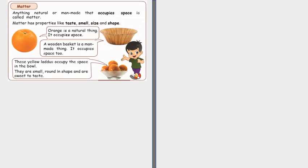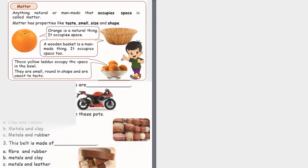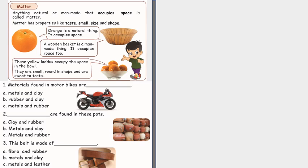Now we are going to talk about matter. Anything natural or manmade that occupies space is called matter. Matter has properties like taste, smell, size and shape. Orange is a natural thing. It occupies space. A wooden basket is a manmade thing. It occupies space too. These yellow ladoos occupy the space in the bowl. They are small, round in shape and sweet to taste.